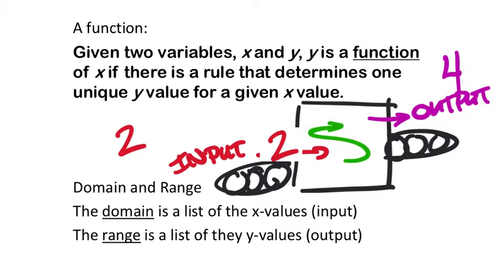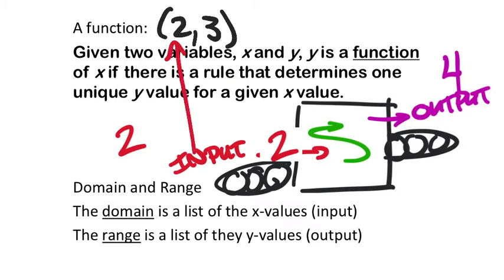What does this have to do with ordered pairs? When we see an ordered pair like (2, 3), the x value is what we call the input, and the y value is what we consider the output — at least when the machine is functioning.